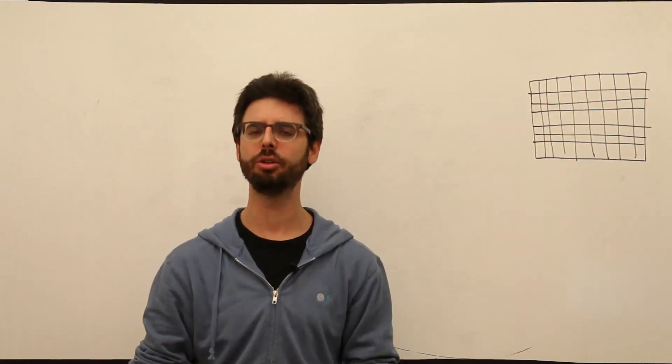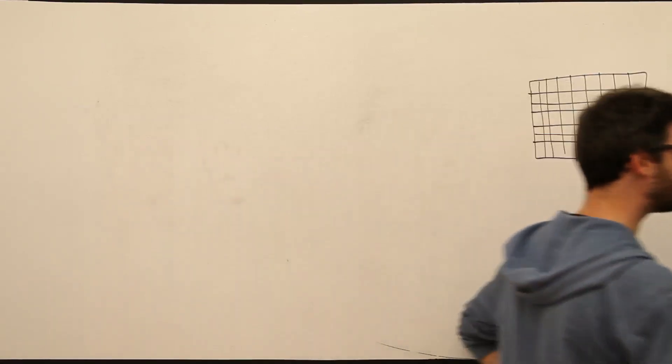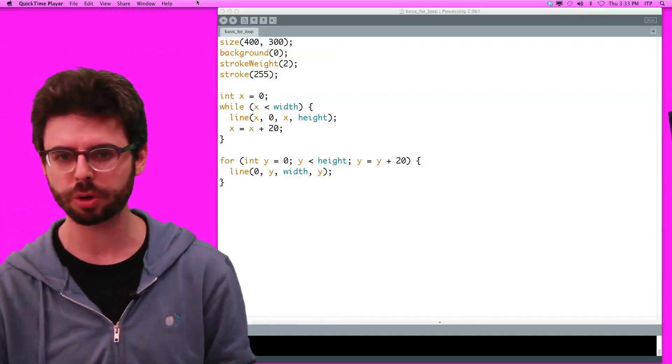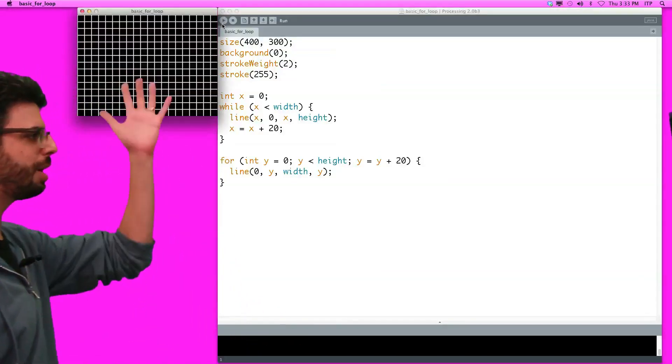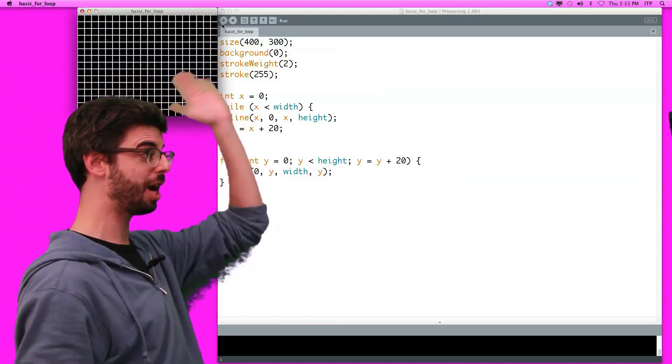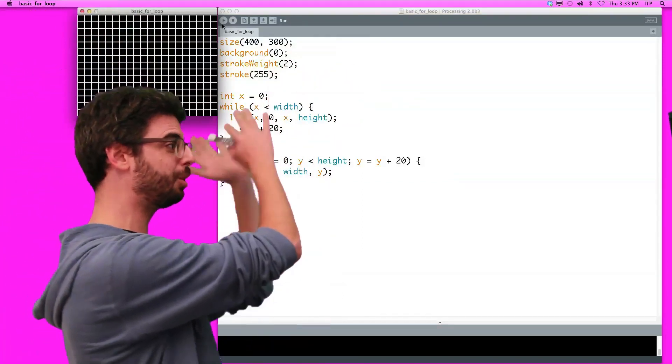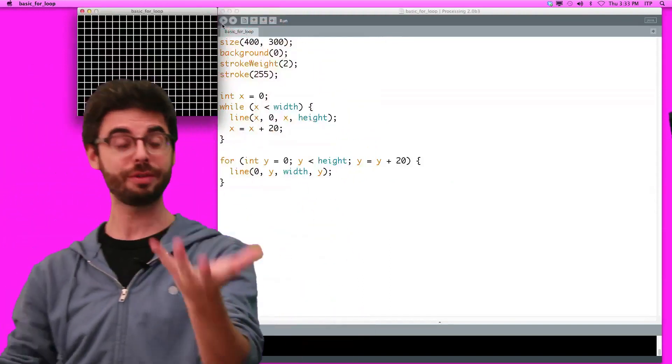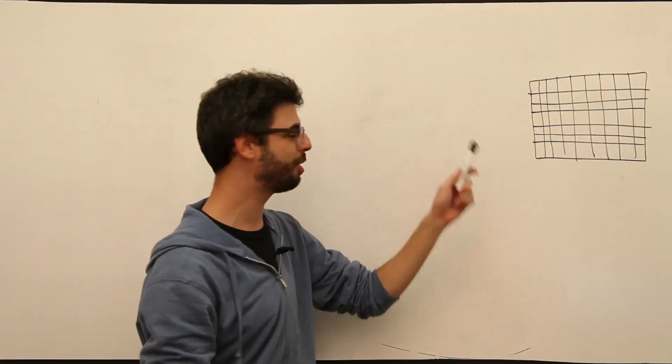So first of all, when do we need a nested loop? Well, let's first look at something we did a little bit earlier. Over here, we had a program that we wrote when we were learning about while and for loops, which drew this grid pattern on the screen. We drew a bunch of lines horizontally, and we drew a bunch of lines vertically. So that's one thing, and it gives us this pattern over here.